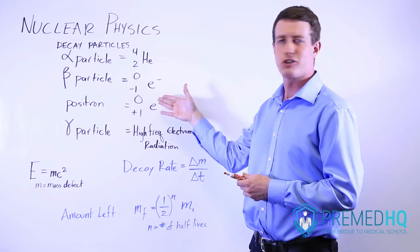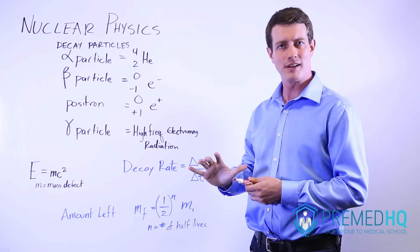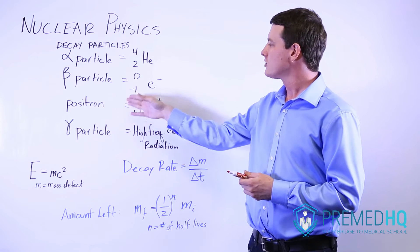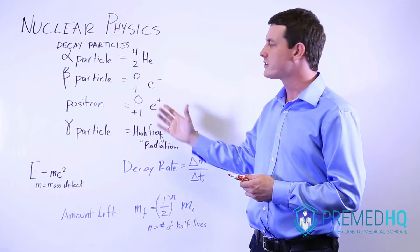The beta particle is essentially an electron. It has no mass but a negative charge. The positron is a zero positive one.